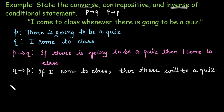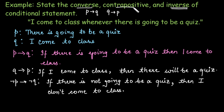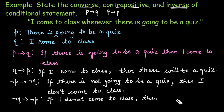The inverse of the conditional statement P implies Q is written as negation P implies negation Q — that is, not P implies not Q. That is equivalent to: if there is not going to be a quiz, then I do not come to the class. The contrapositive is negation Q implies negation P, so: if I do not come to class, then there will not be a quiz.